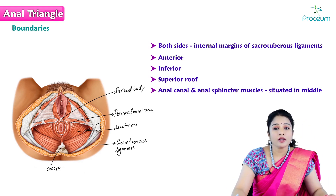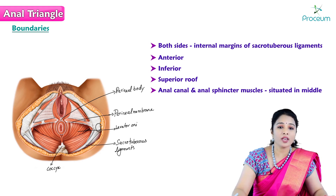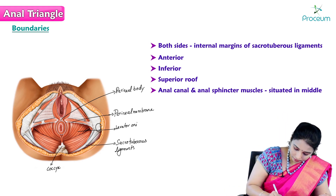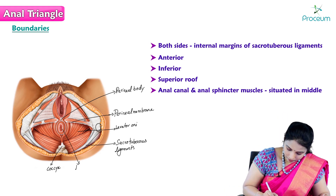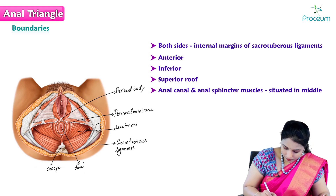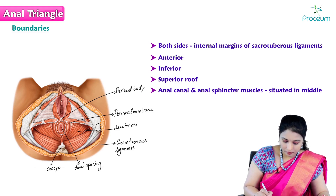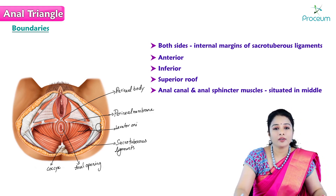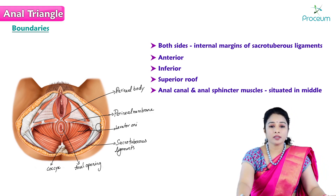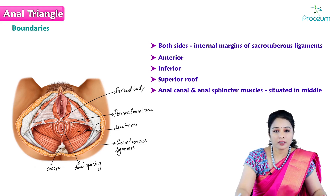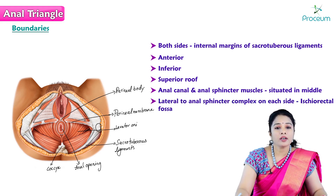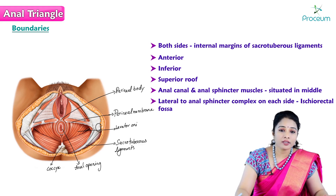The anal canal and anal sphincter muscles are situated in the middle of the anal triangle. Here is the anal opening — the opening of the anal canal — which is surrounded by the muscles called the anal sphincter. Lateral to the anal sphincter complex on each side is the ischiorectal fossa.